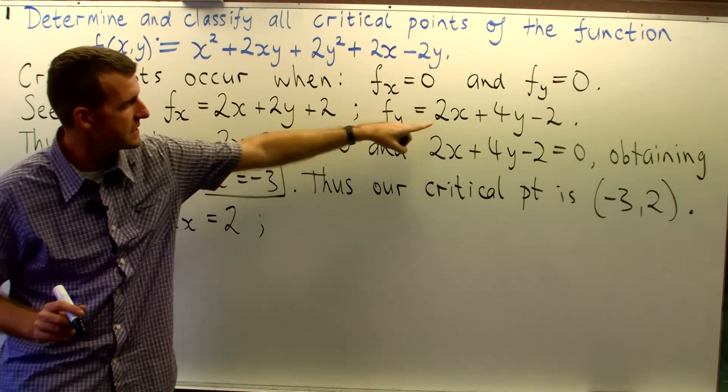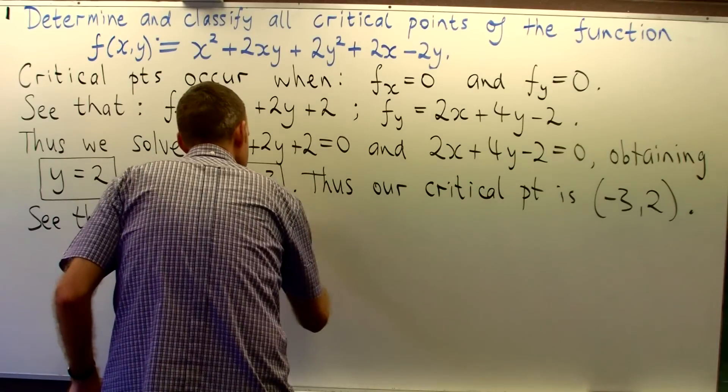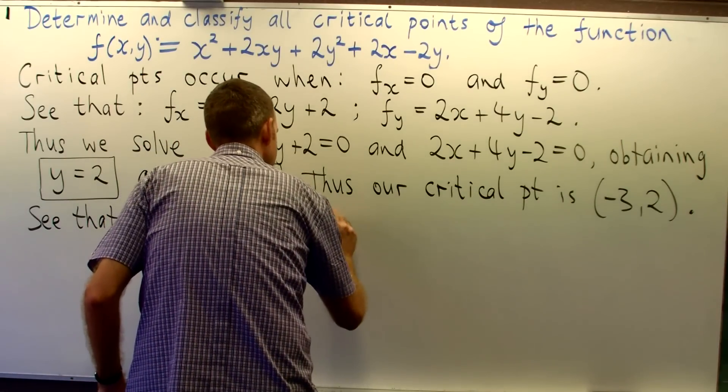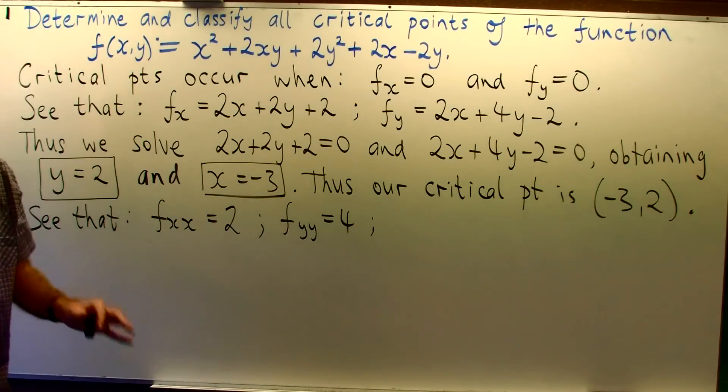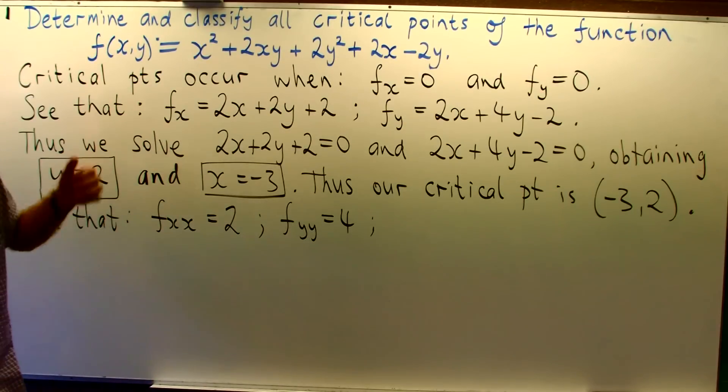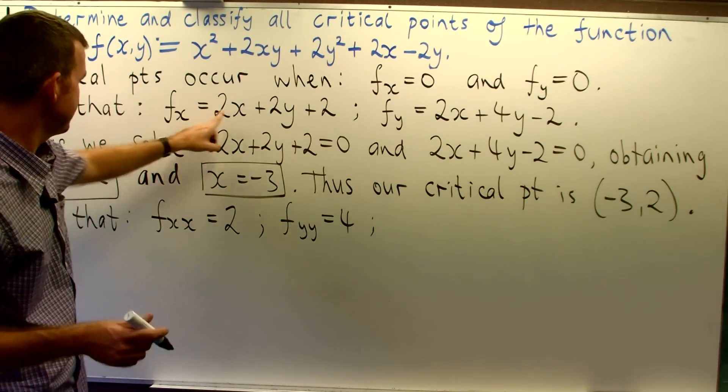F sub yy is going to be 4. And the mixed partial, f sub xy, is going to be 4. And the mixed partial f sub yx in this case, they are both equal, is going to be 2.